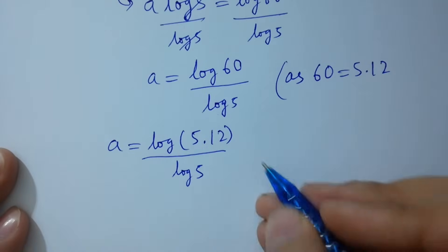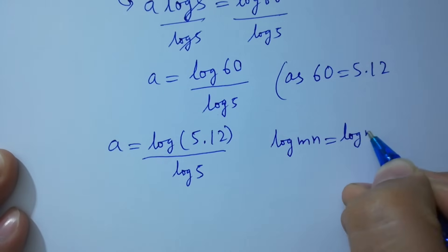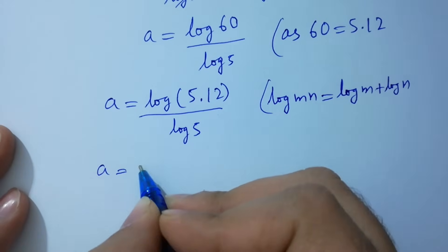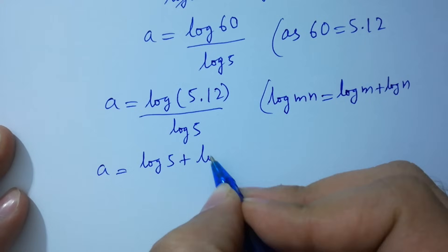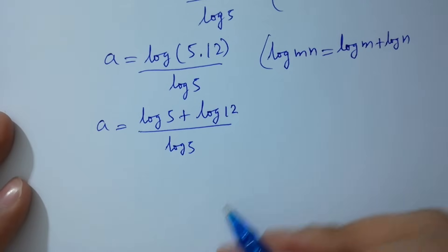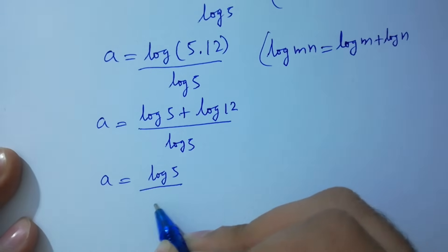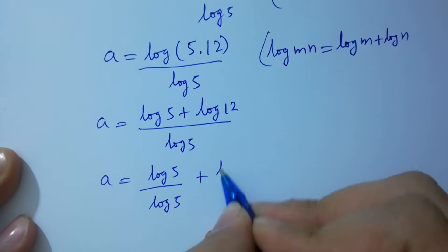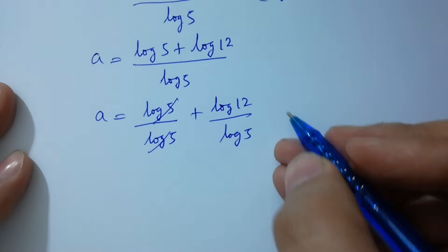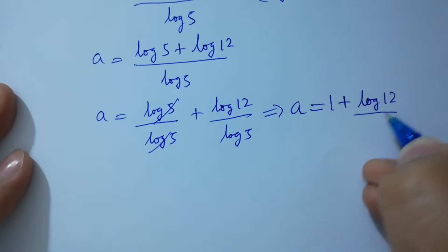Using the rule log mn equals log m plus log n, we get a equals log 5 plus log 12, over log 5. Log 5 and log 5 cancel, giving a equals 1 plus log 12 over log 5.